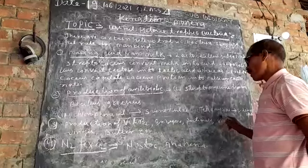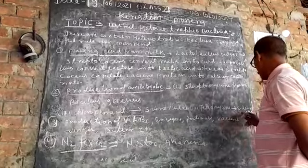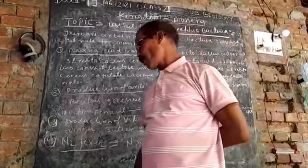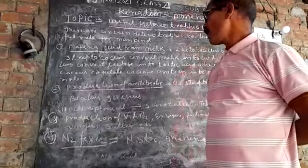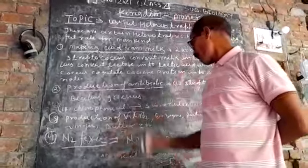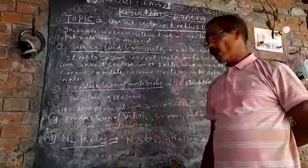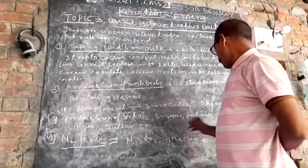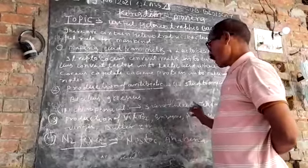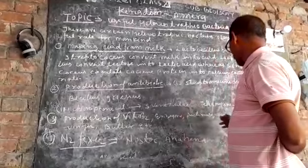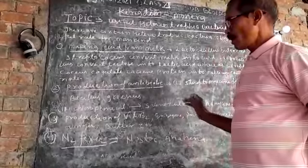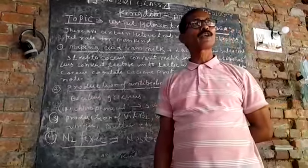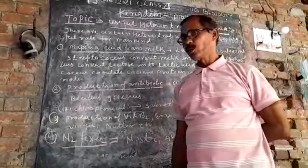Terramycin is obtained from Streptomyces rimosus. A third important role of heterotrophic bacteria is the production of vitamin B12 and vitamin B2, also known as riboflavin. The enzyme pectinase is also obtained from certain kinds of heterotrophic bacteria. Vaccines, vinegar, and butter are all also obtained from heterotrophic bacteria, which are useful for mankind.